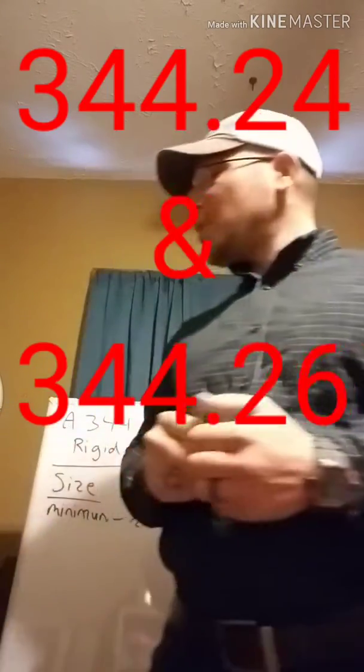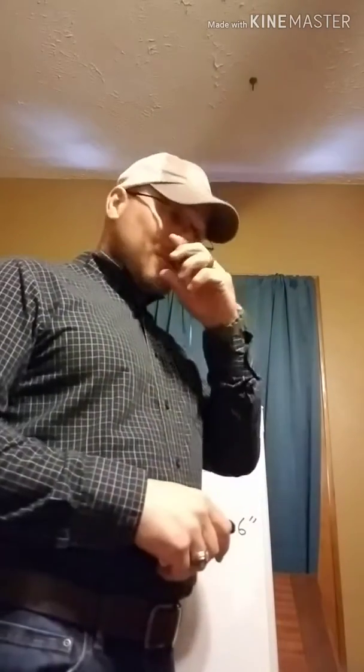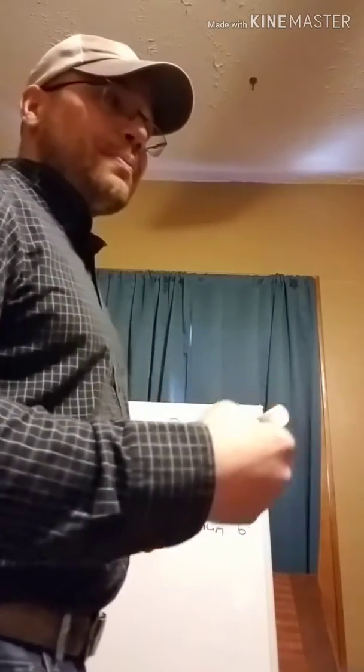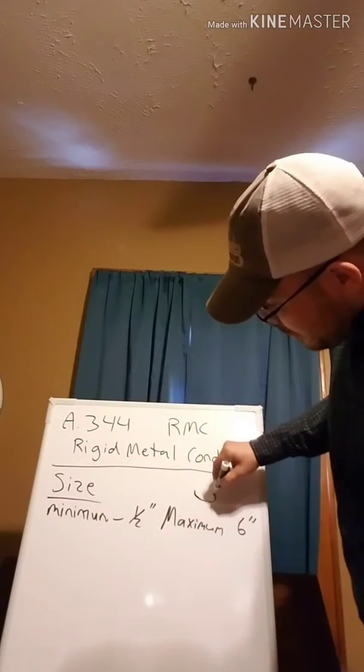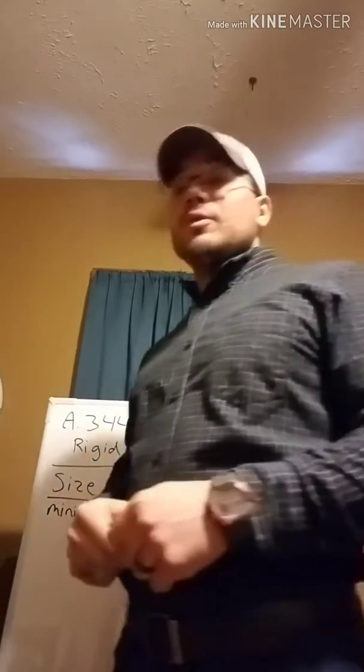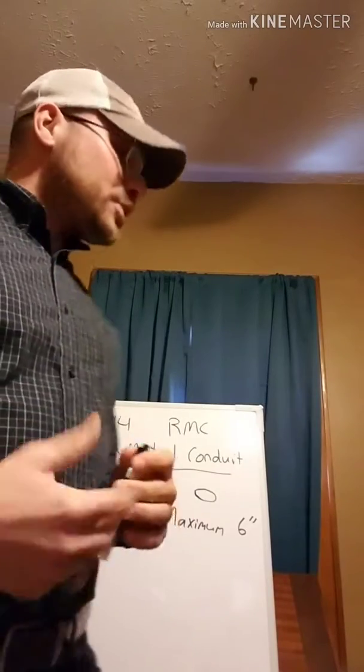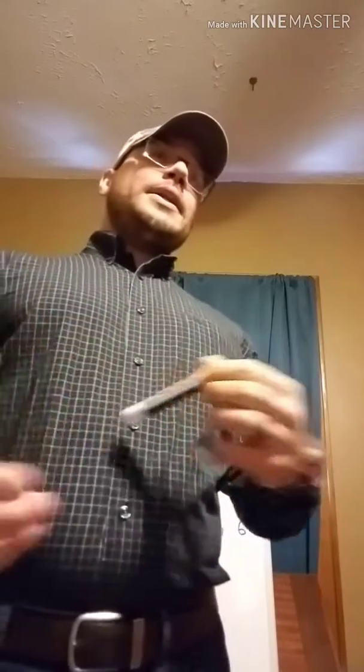Sections 344.24 and 344.26 cover bends — how made and number in a run. Just like IMC, we're going to mostly use power benders, whether hydraulic or electric. One thing to note here: when we bend it, we can't effectively reduce the diameter of the pipe — we don't want to oval out the conduit, because it's going to make it harder to pull wire through. Sometimes you'll put the pipe in wrong and it will bend that a little bit. You've seen with EMT how easy it is to kind of flatten slightly. We want to make sure we don't do that effectively — meaning enough that it affects how easily our wire can be pulled through.